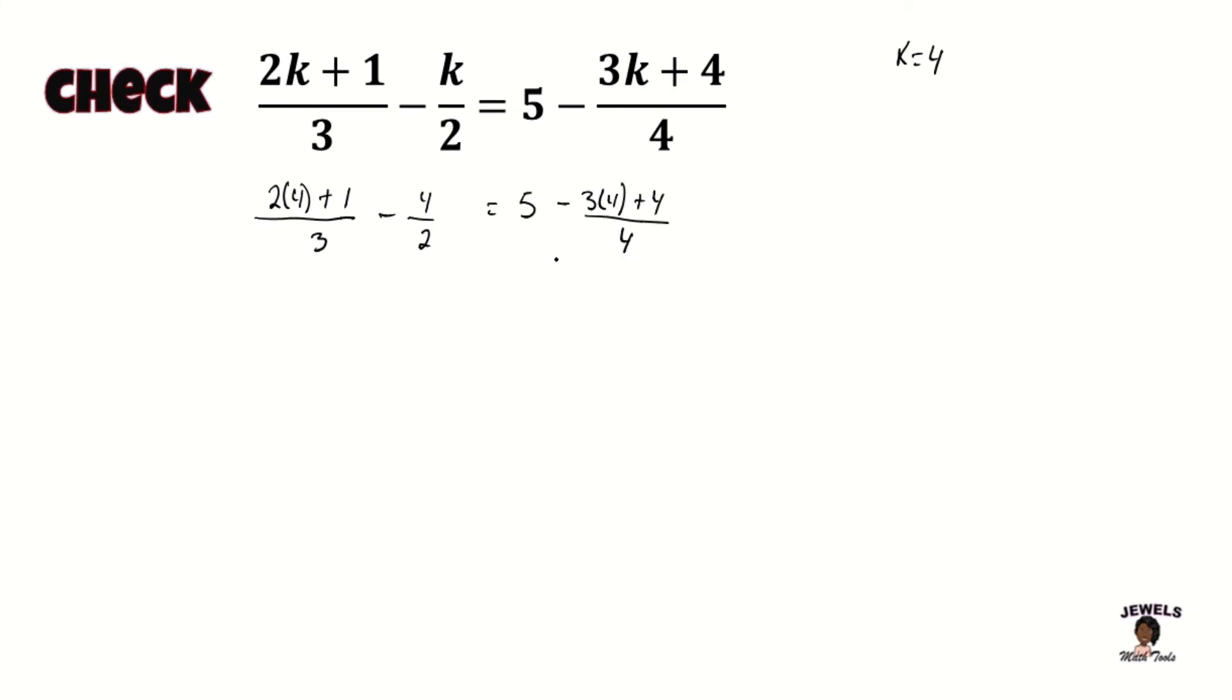So 2 times 4 is 8, and 8 plus 1 will equal to 9 thirds, subtracting 4 halves equals our 5. And 3 times 4 is equal to 12, and 12 plus 4 is 16 fourths. And now what I'm going to do here, since I noticed that there's a lot of common multiples in our numerators and denominators, I'm going to simplify my fractions and see where we go from here. So 3 divides itself once, 3 divides into 9 three times, 2 divides into itself once, 2 divides into 4 twice, putting back our 5. And 4 will divide into itself once, 4 can divide into 16 four times, which will equal to plus 4.